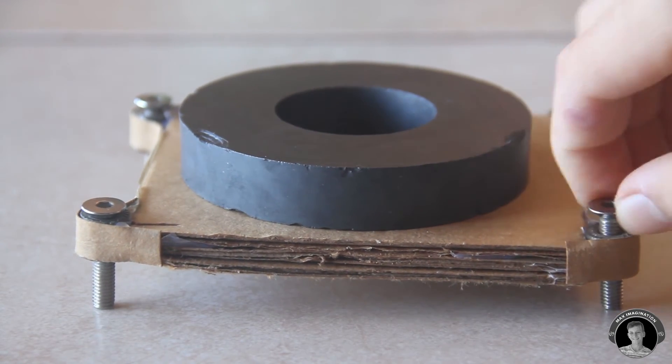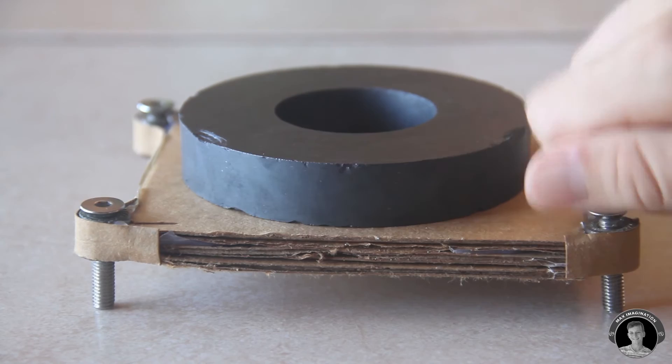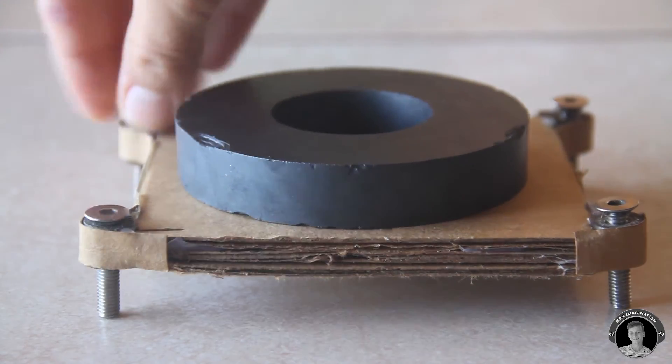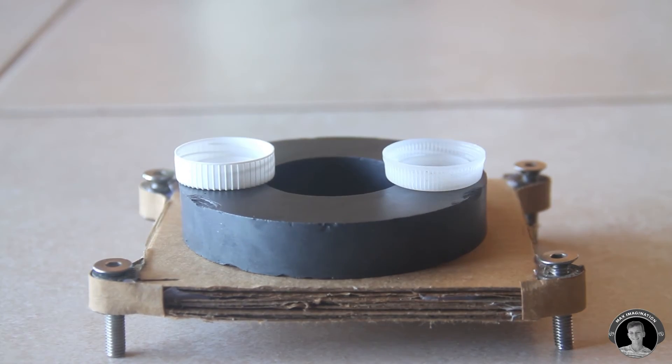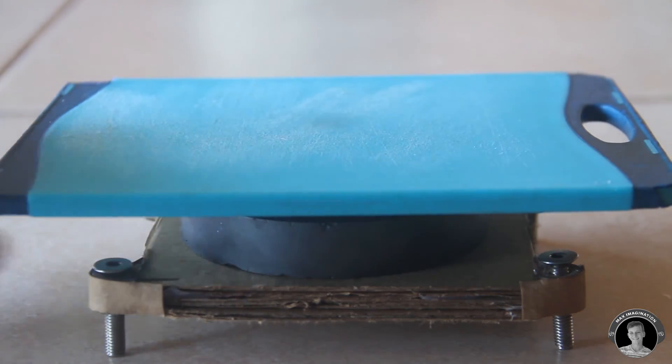This is my adjustable base for the magnet. By turning a bolt in any one of these corners, you can either lift or lower a point. This makes it so much easier to fine-tune and get the spinning top levitating.